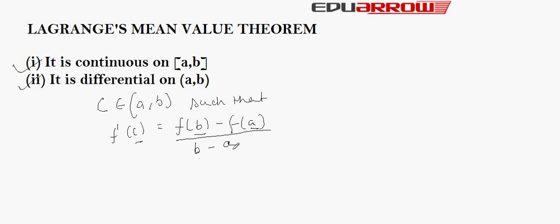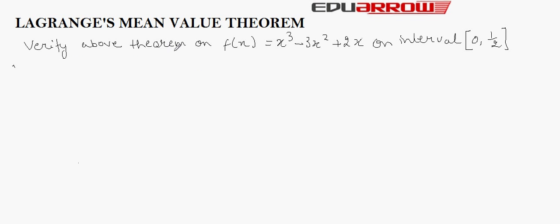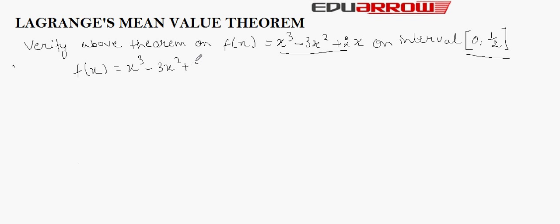Now let us see this theorem through an example. In this question, it is given that F(x) equals the given function and we have to verify Lagrangian's mean value theorem on this function on the interval 0 to 1/2. So F(x) is equal to X³ minus 3X² plus 2X.